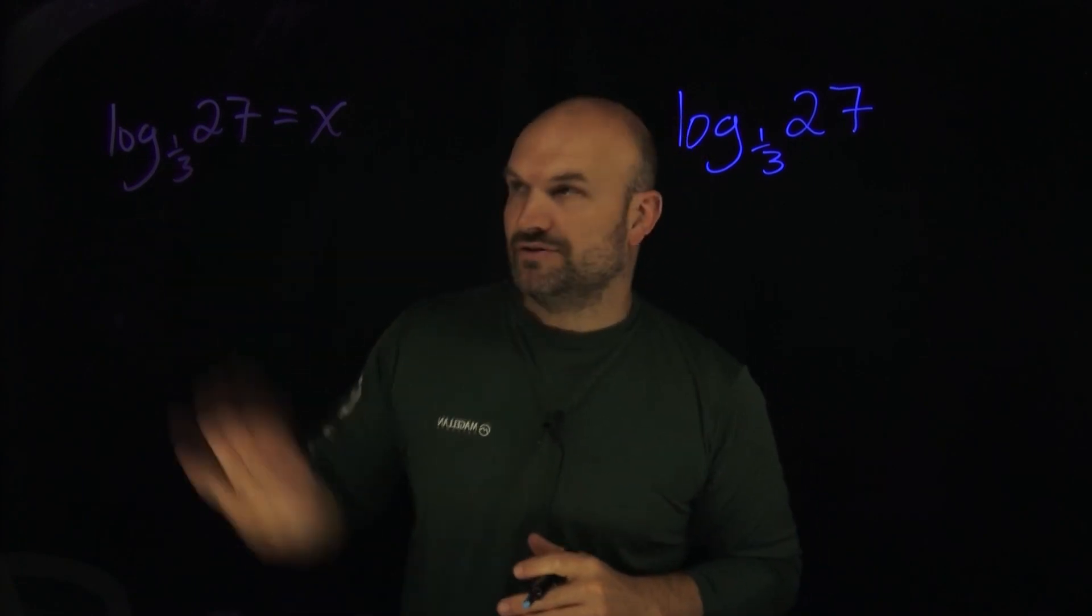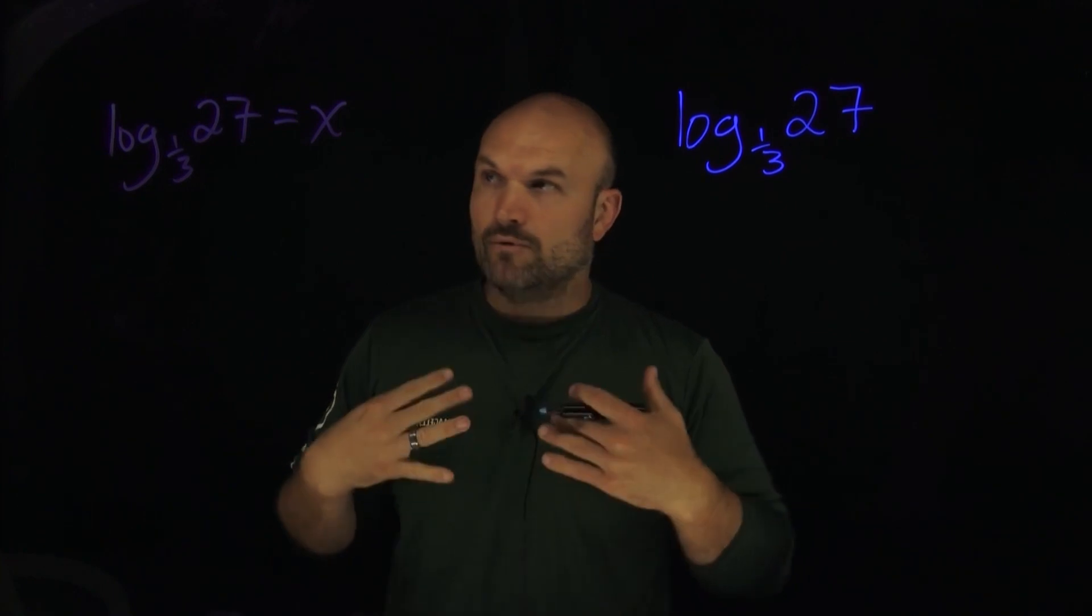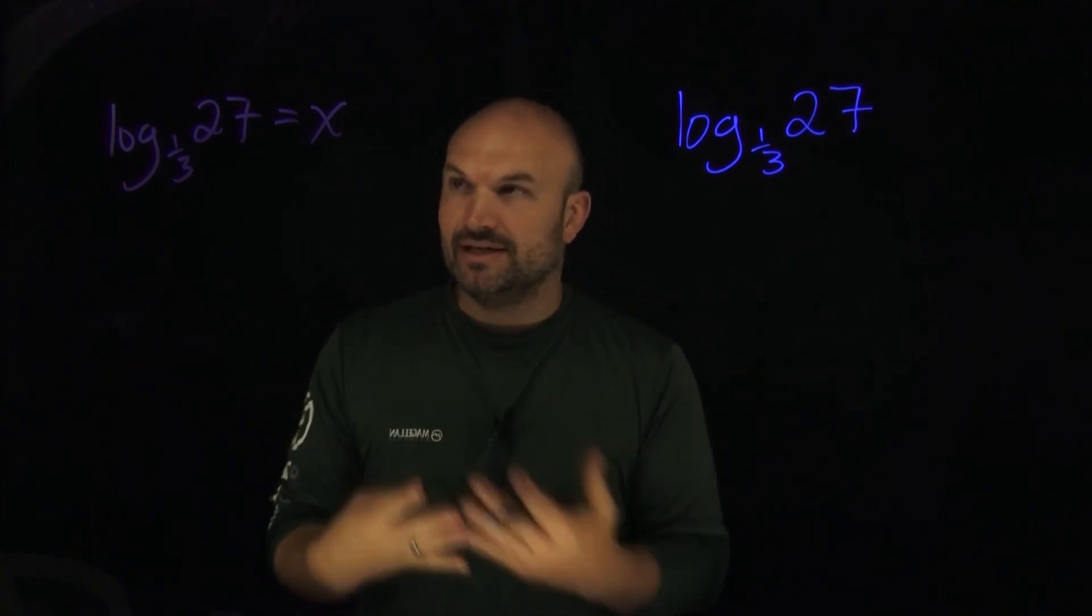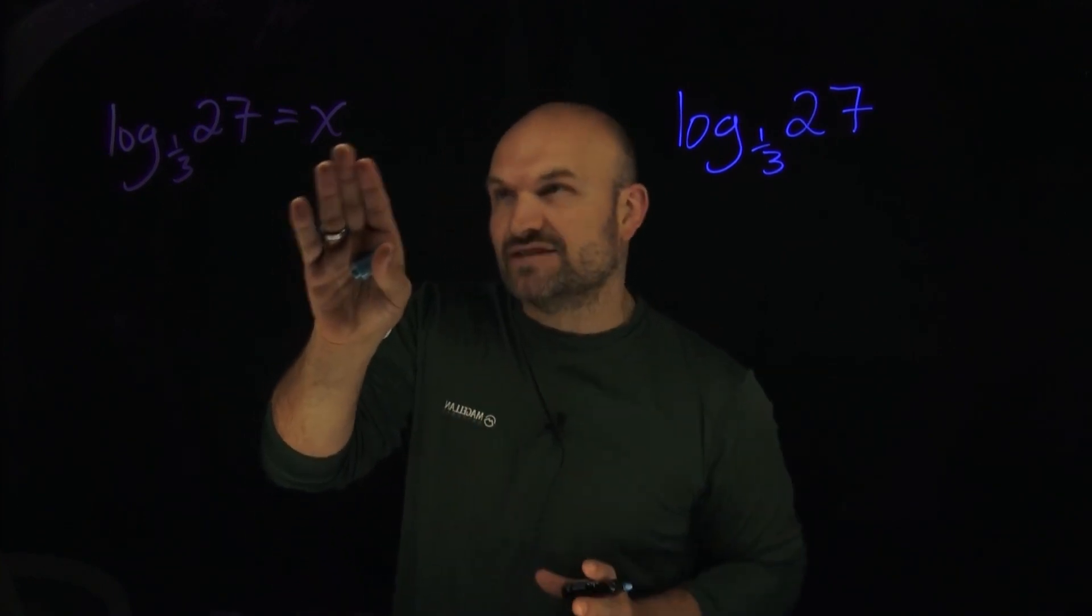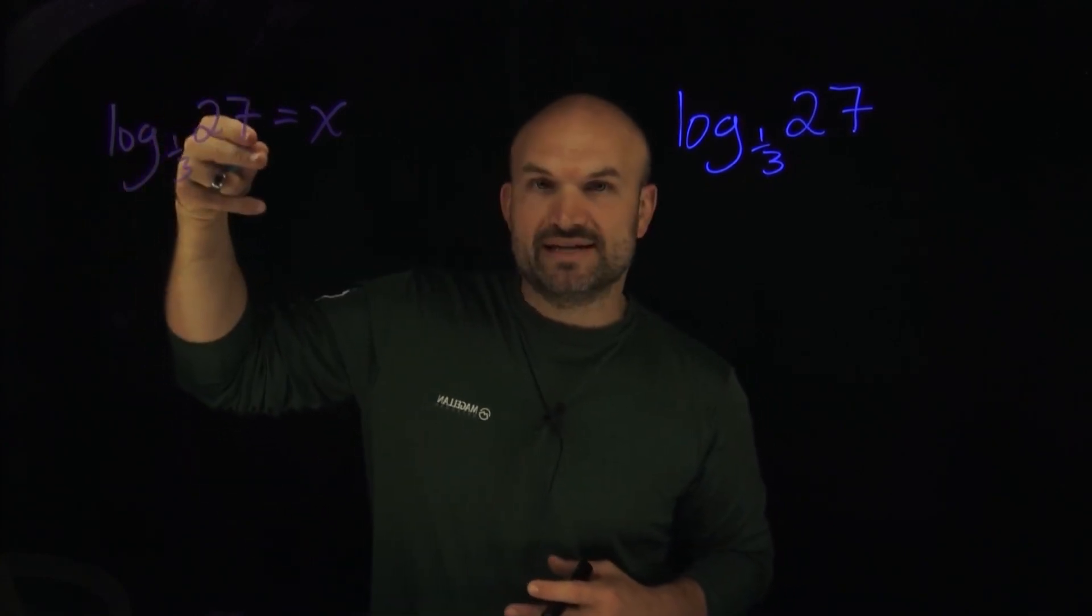So now I have a logarithmic equation. I have log base one-third of 27 equals x. Now when we're trying to understand a logarithm, we need to understand what exactly this x represents. This x represents the power that we can raise one-third to get to 27.